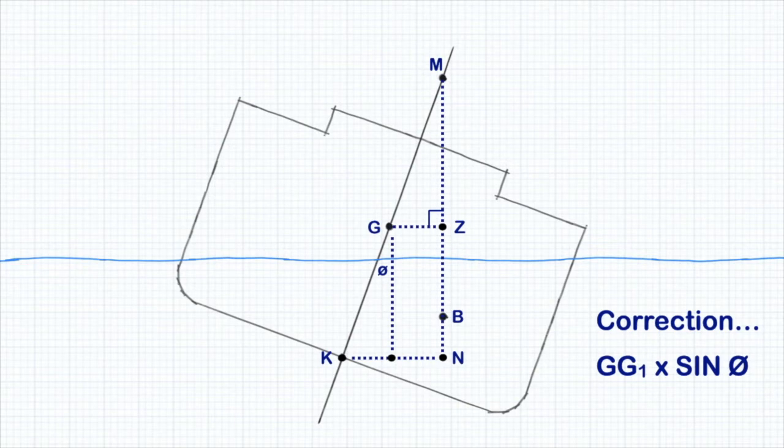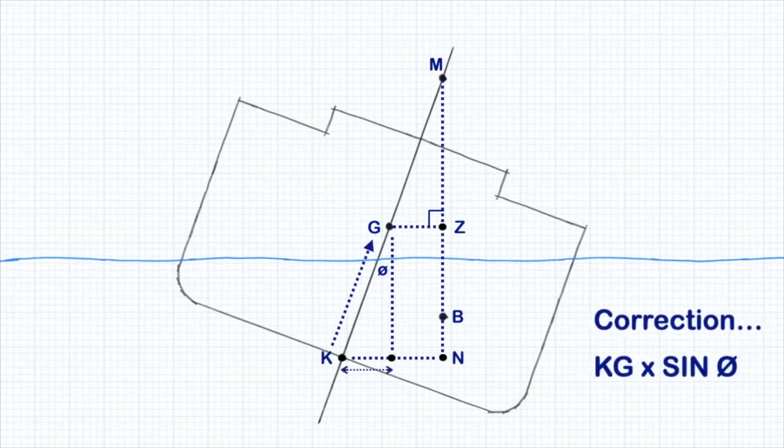This is very similar to how we calculated corrections to GZ based on a shift in our center of gravity, only this time the shift in the center of gravity is from K to G. So the formula for the correction changes from G to G1 times sine theta to KG times sine theta.